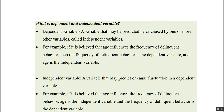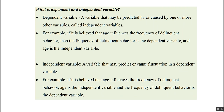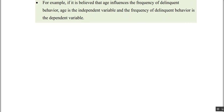Now, regarding variables: the dependent variable is a variable that may be predicted by or caused by one or more independent variables. The independent variable predicts or affects the dependent one. For example, if age influences the frequency of delinquent behavior, then frequency of delinquent behavior is the dependent variable and age is the independent variable.